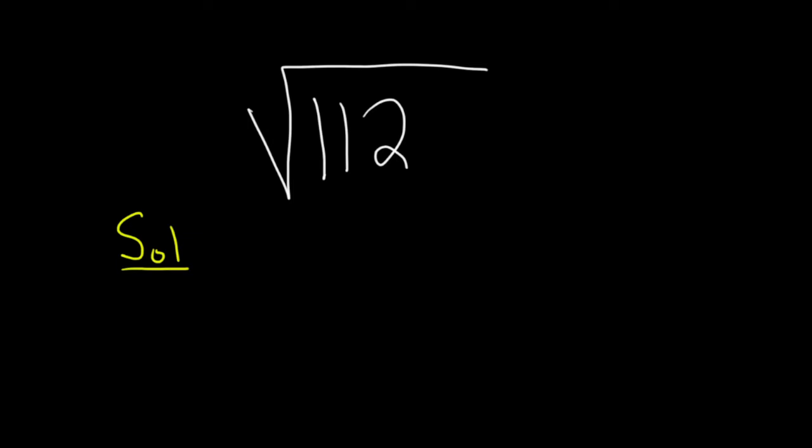When we're doing this problem we're thinking what is the largest factor of 112 that when we take the square root of that factor we get a whole number. So 112 can be written as 16 times 7.